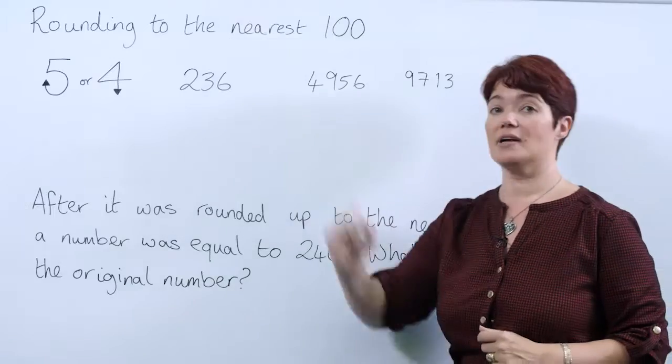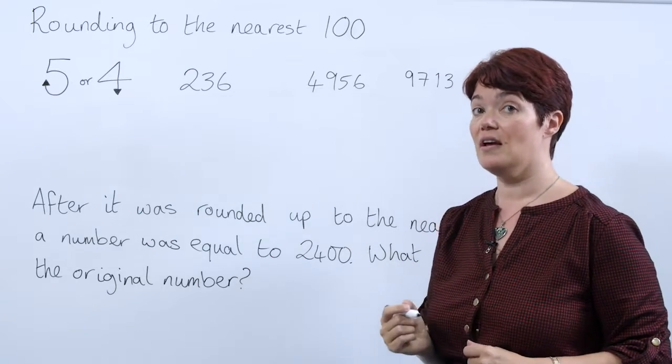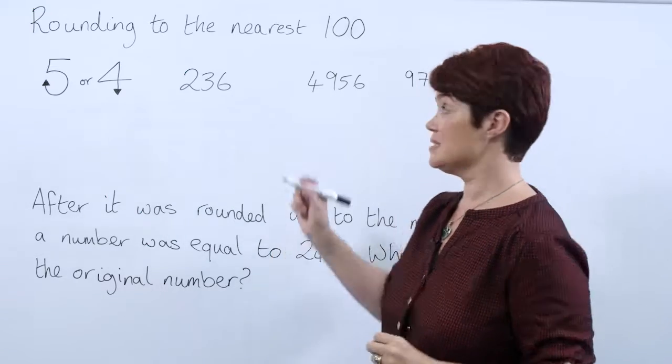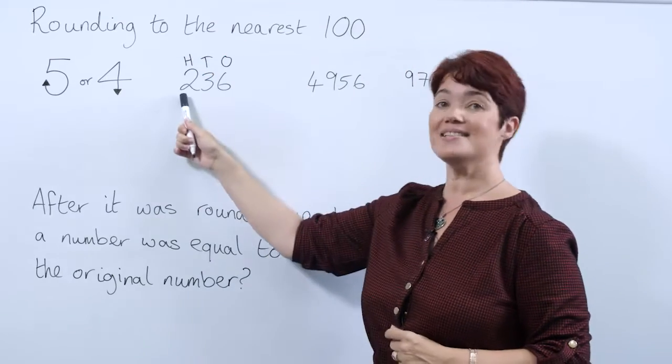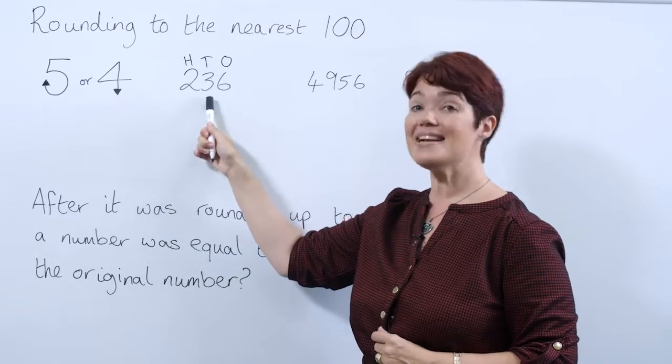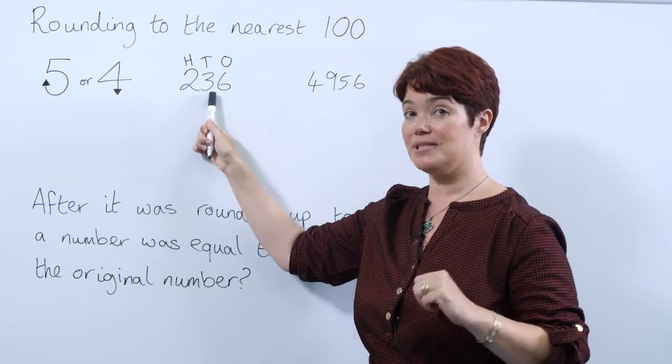So the first number we're going to look at is 236. We're going to label it first with our place values: ones, tens, hundreds. As we're rounding to the nearest hundreds, we're going to look at the tens column to decide if we're rounding up or down.